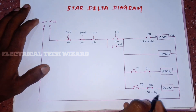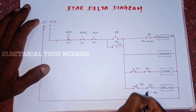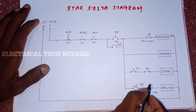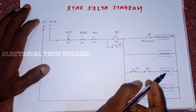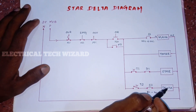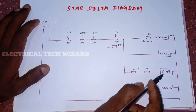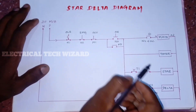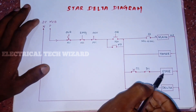D1 and S2 is interlock. That is the star controller and the delta controller. The delta controller and the star controller are interlocked.